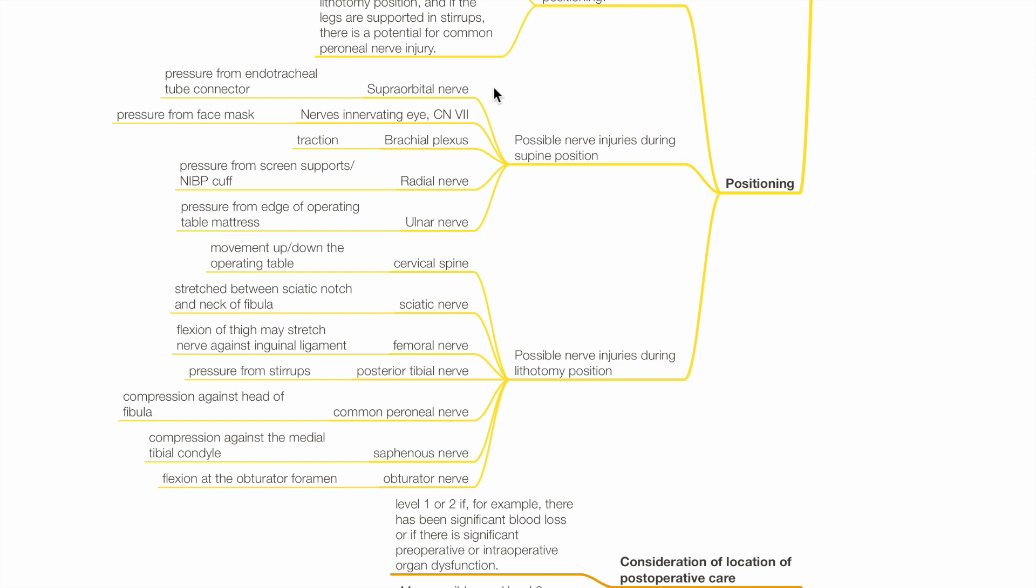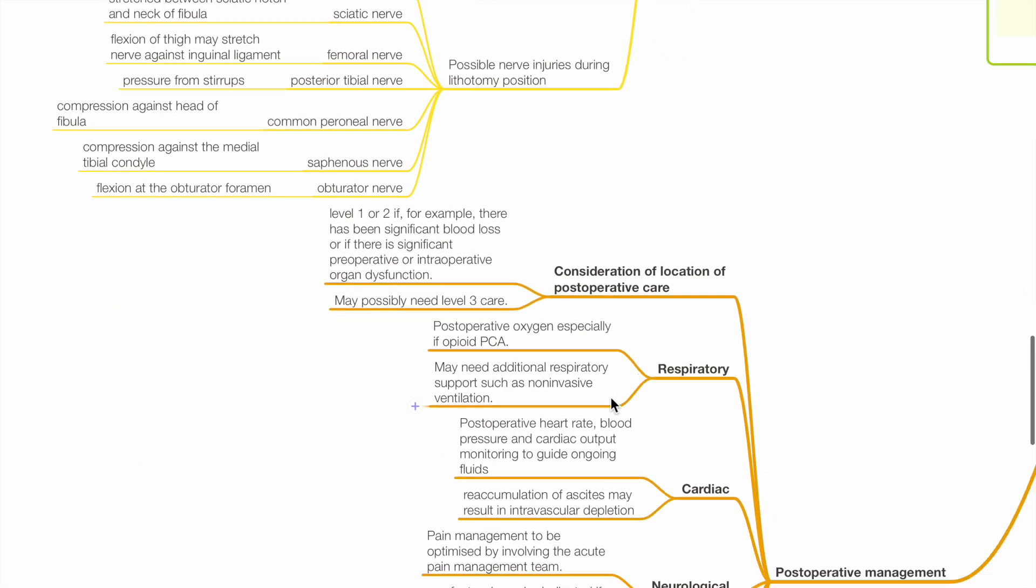Possible nerve injuries during lithotomy position include cervical spinal cord due to movement up and down the table, sciatic nerve which is stretched between the sciatic notch and neck of fibula, femoral nerve due to flexion of the thigh which stretches the nerve against the inguinal ligament, posterior tibial nerve due to pressure from stirrups, common peroneal nerve due to compression against head of fibula, saphenous nerve due to compression against medial tibial condyle, obturator nerve due to flexion in the obturator foramen.